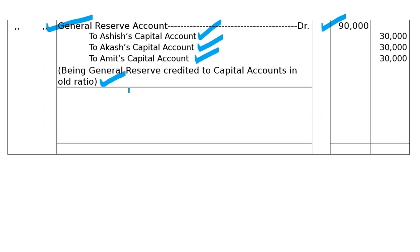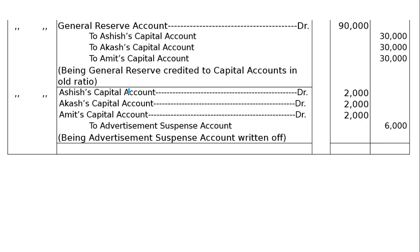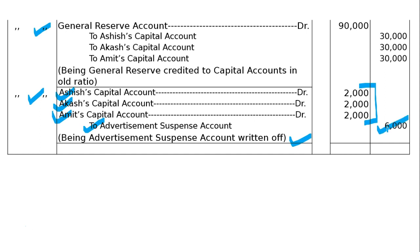Sixth journal entry: Advertisement suspense account is on the asset side — it is a fictitious asset and must be written up. This is a reverse entry: all three partners' capital accounts debited in old ratio, to Advertisement suspense account 6,000. Narration: being advertisement suspense account written up as accumulated loss or unwritten-off expenditure. After this, total both sides of the journal to confirm they tally.